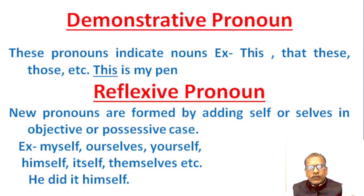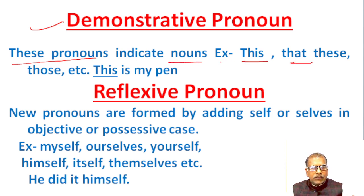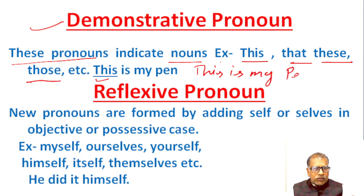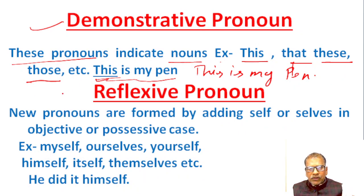Next, demonstrative pronouns. These pronouns indicate nouns. Examples: this, that, these, those, it is. 'This' is singular number and 'these' is the plural of 'this'. 'That' is singular number and 'those' is the plural of 'that'. 'This' indicates a near singular person or thing; 'that' denotes far away things. Example: 'This is my pen.' In this sentence, 'this' is a demonstrative pronoun.